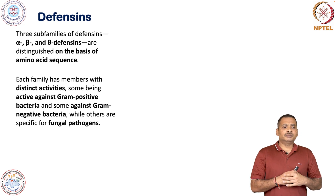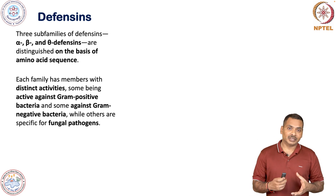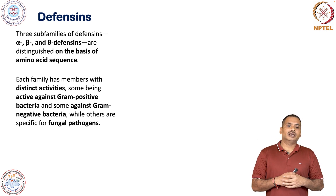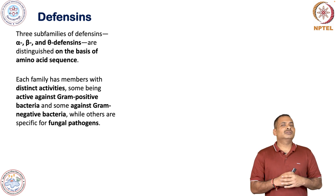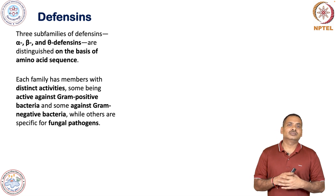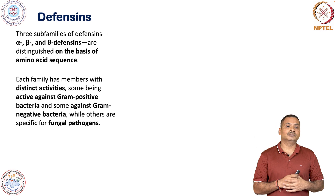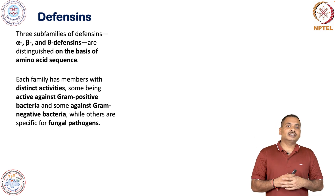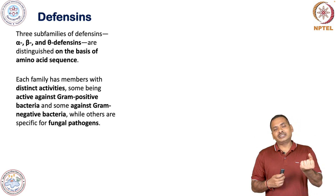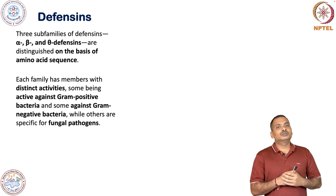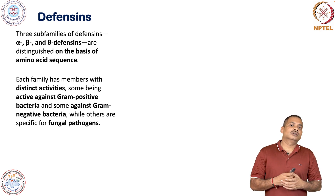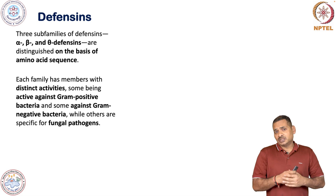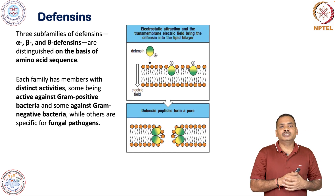Each defensin family member has distinct activity. Some are active against gram-positive bacteria, some against gram-negative bacteria, and some play an important role against fungi — they have an antifungal property. They are attracted towards the membrane of the microbial pathogen, whether gram-positive, gram-negative, or fungal, and deposit in such a way that they create a hole.